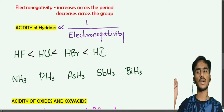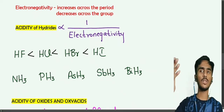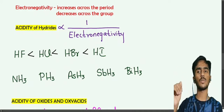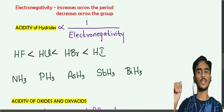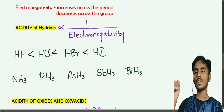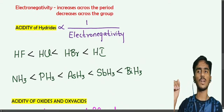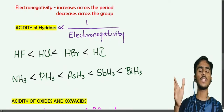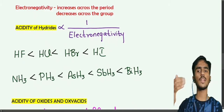For the nitrogen family hydrides, going from top to bottom, electronegativity decreases. That is why the acidity order will increase from top to bottom. Acidity of hydrides is inversely proportional to electronegativity.